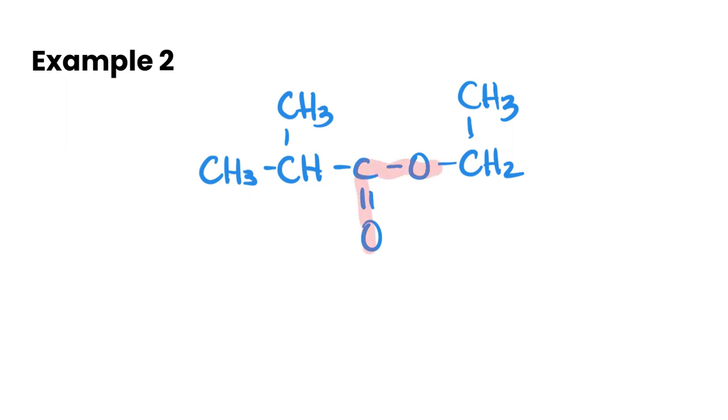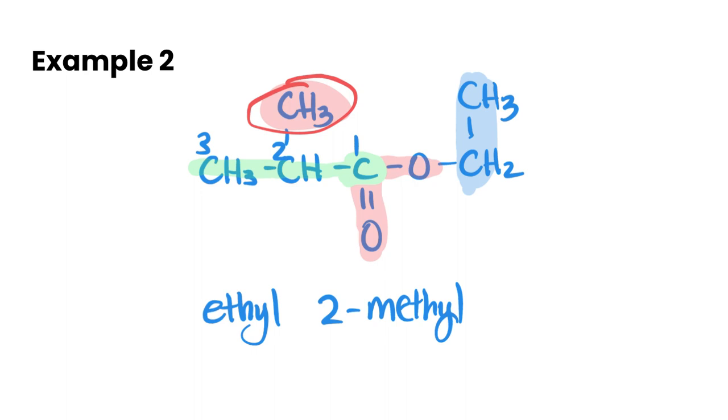Our next example - again, recognizing we have an ester. Our alcohol derivative is off to this side and we have two carbons here. And our other side, we've got one carbon, two carbons, three carbons, and we have a methyl group attached. When it comes to things attached in esters, we name it on the part of the molecule where it's attached to. So because it's attached to the carboxylic acid side and not to the alcohol side, we're going to name the alcohol part first, which is an ethyl. And then we're going to add this substituent on here. So we got one, two, three. So this is going to be ethyl 2-methylpropanoate. If there was a methyl group on the alcohol side, it would come in the front of the name here.